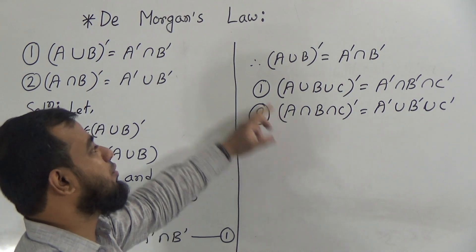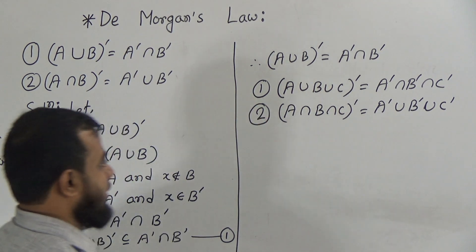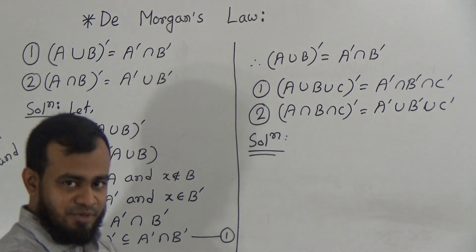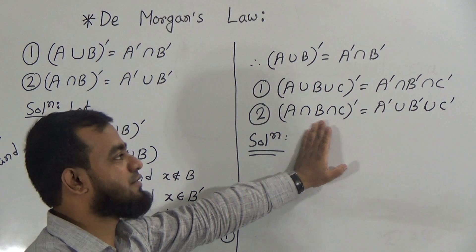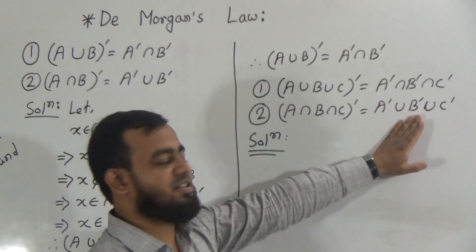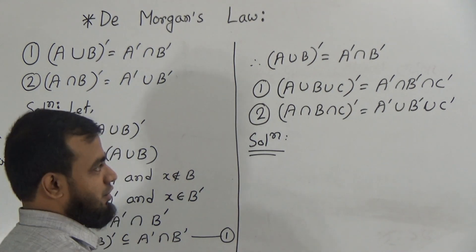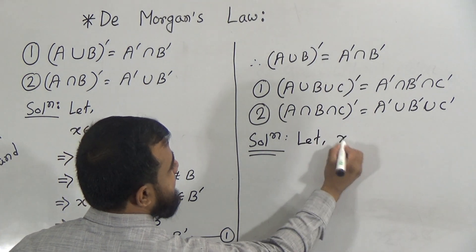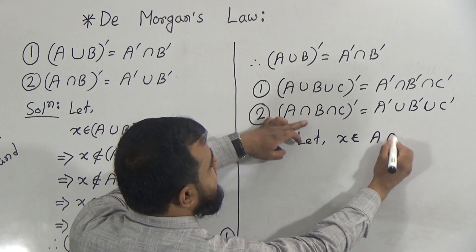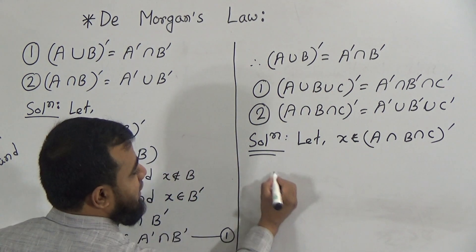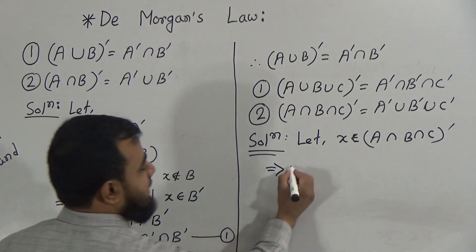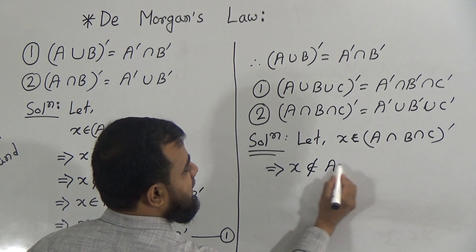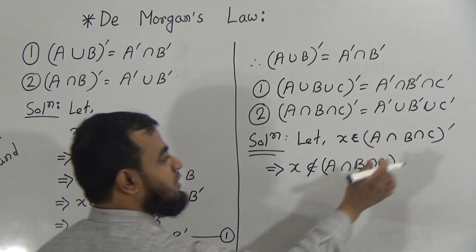To prove proposition two, similarly, we first need to prove the left hand side is a subset of the right hand side. Assume that x is an element which belongs to A intersection B intersection C whole prime. That means x doesn't belong to the set A intersection B intersection C, because x belongs to this set's complement.